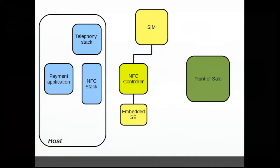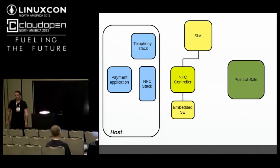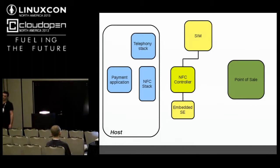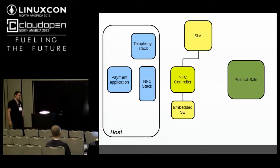There is a SIM Alliance API that typically EMVs will ask you to implement, but then you have companies like Google Wallet that don't implement it — they have their own stuff and don't really care about EMVs. Although they have deals with them, they're large enough to afford not implementing this API. But yes, there is an API — it's not mandatory, but it's strongly encouraged by EMVs.